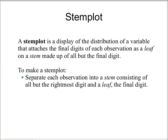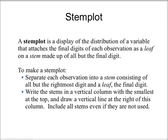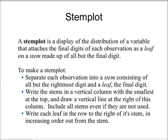To make a stem plot, first I want to separate each observation into a stem consisting of all but the rightmost digit, and a leaf, which is the final digit. The next step is to write the stems in a vertical column with the smallest at the top, and draw a vertical line at the right of this column. I want to include all the stems, even if they aren't used. Lastly, I'm going to write each leaf in the row to the right of its stem in increasing order out from the stem.